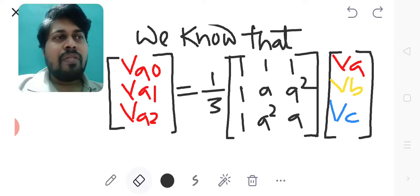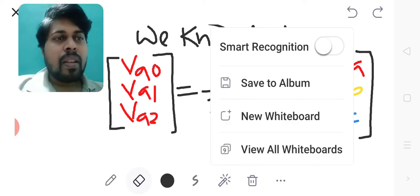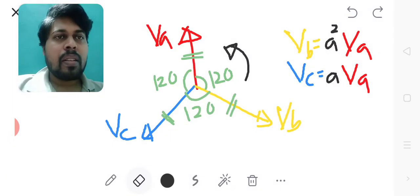If I take VA as a reference phasor, I need to express VB as well as VC in terms of VA. We have the balanced system like this where the magnitudes are equal, and the phase angle difference between any two phasors are 120 degrees apart.